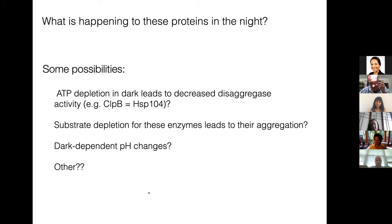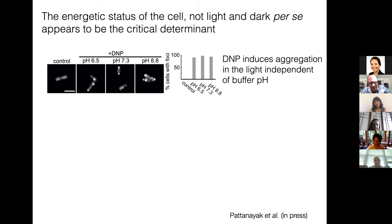Maybe ATP depletion in the dark is leading to decreased disaggregase activity. There are enzymes like ClpB, which is HSP104 in eukaryotes, supposed to prevent proteins from inappropriately aggregating and uses ATP to pull them out of aggregates. It's also possible that for most of these proteins that we're seeing, they're enzymes that themselves act on substrates, and those substrates might become depleted in the dark. Or could there be dark dependent pH changes in the cell that are responsible? We don't really know, but we do know that from exploring some possibilities, it seems like really the energetic status of the cell, not directly some kind of signaling about light and dark, really is the critical determinant.